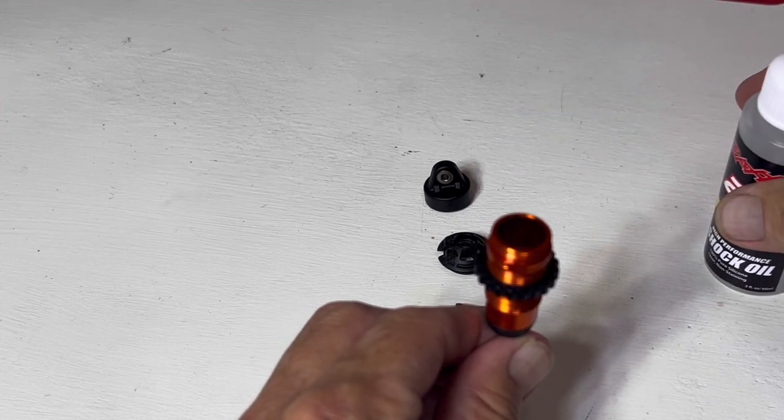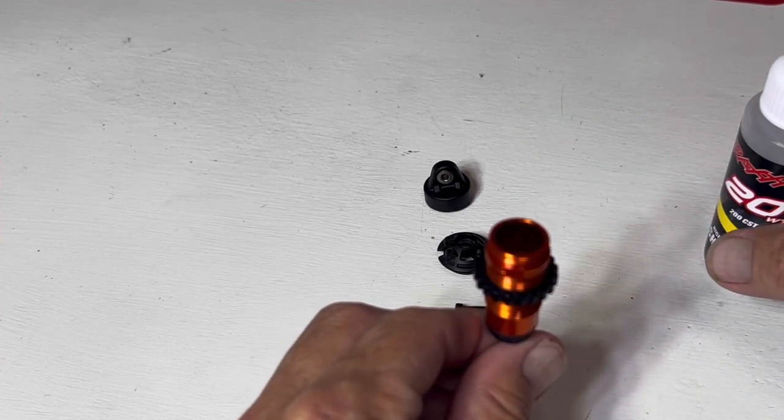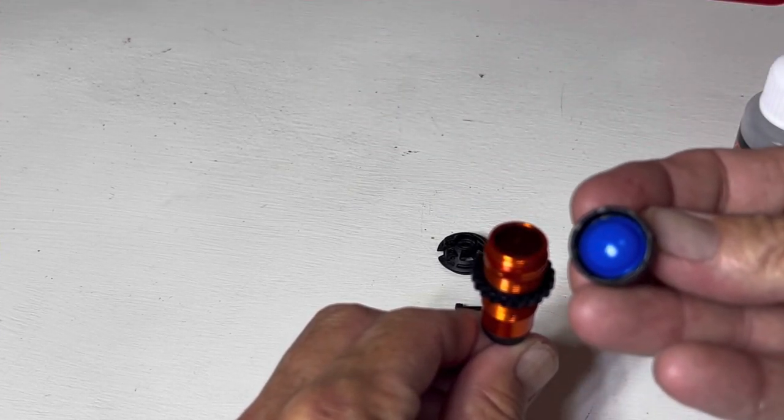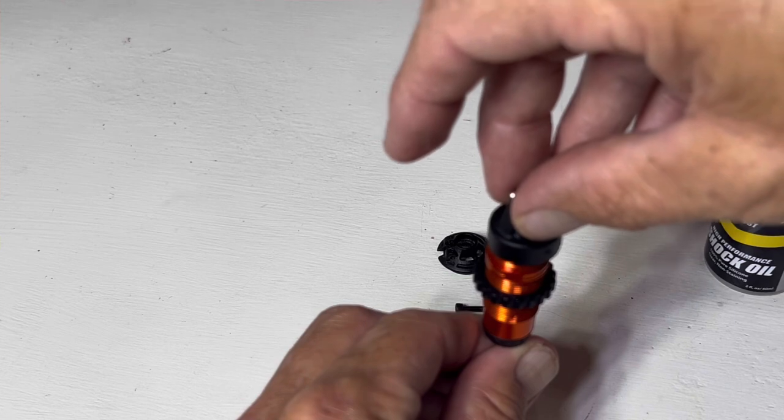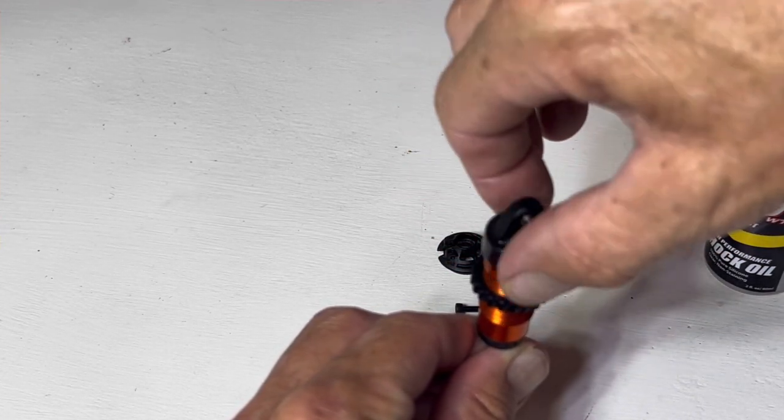So once again, make sure your shaft is all the way down, filled all the way to the top. Make sure your seal is still in place. Put it back on nicely, don't want to cross thread, and then spin that thing on. You might lose a little bit of oil, that's okay.